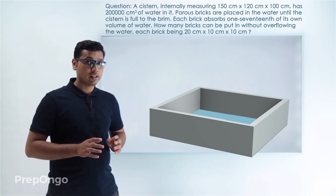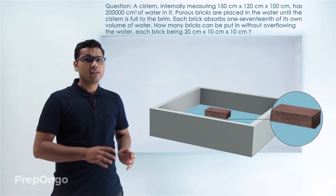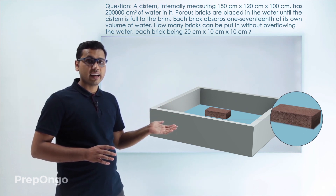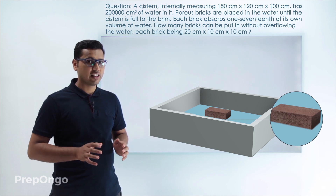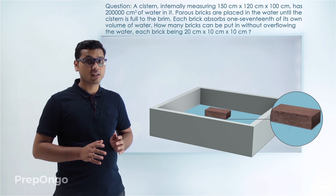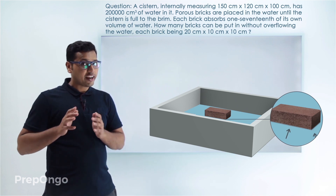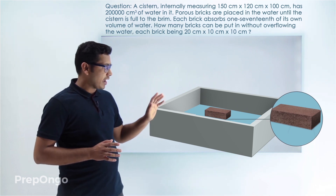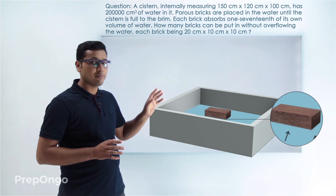We are given that we are putting some porous bricks into this water tank. When we put the bricks in, the bricks will raise the level of the water. Now since the bricks are porous, some water will fill up inside these bricks and that water will not constitute the increase in volume of the water. So effectively the level rise of water will be the volume of the brick minus the volume of water which has gone into the pores of the bricks.